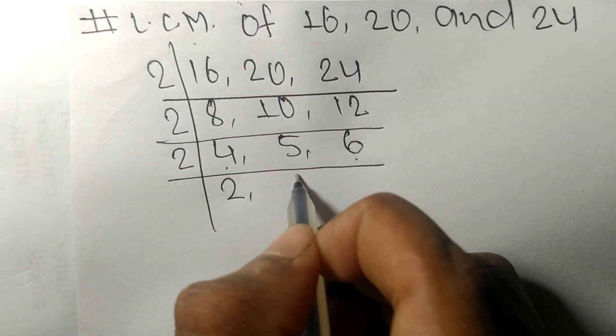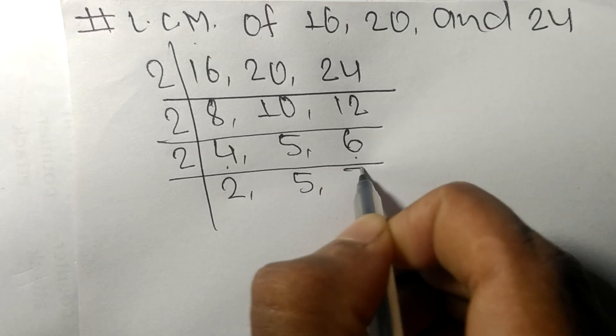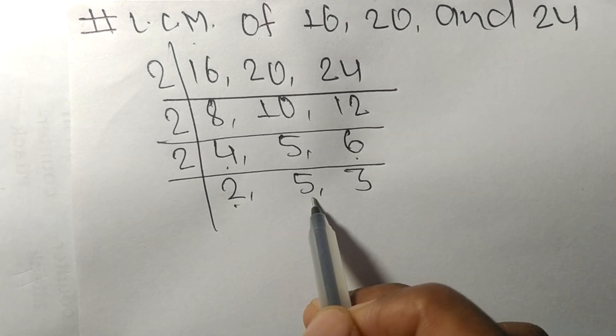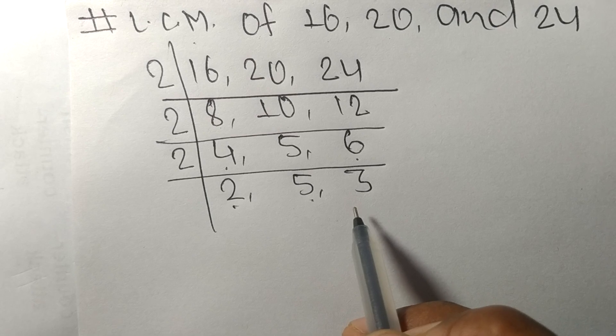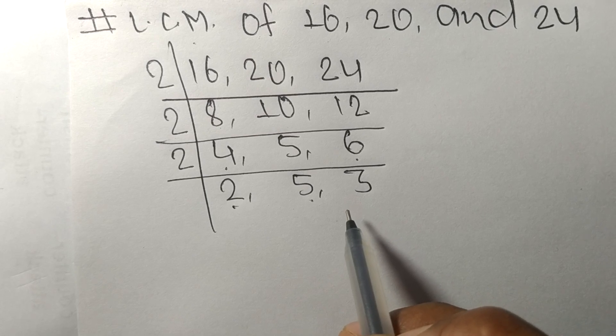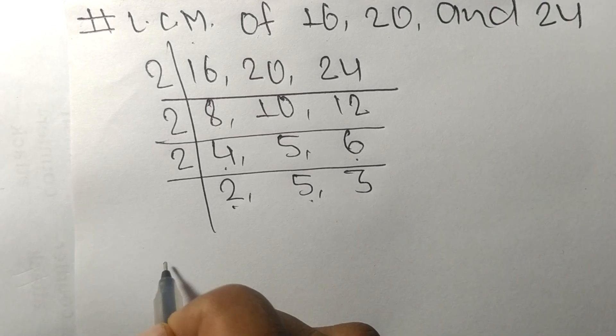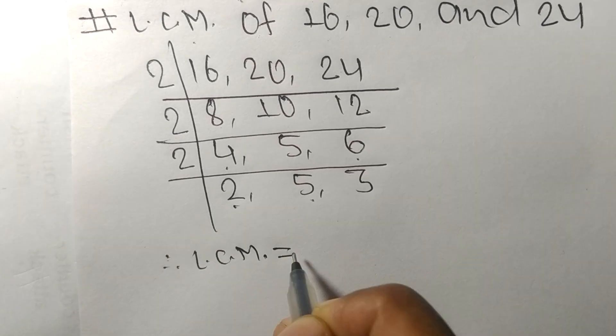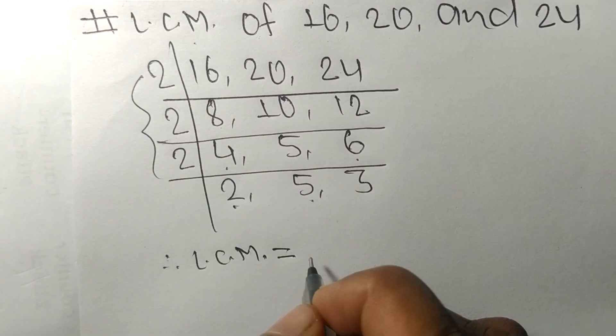Now we have 2, 5, and 3, which are not exactly divisible by the same number. Therefore, the LCM is equal to the product from this side.